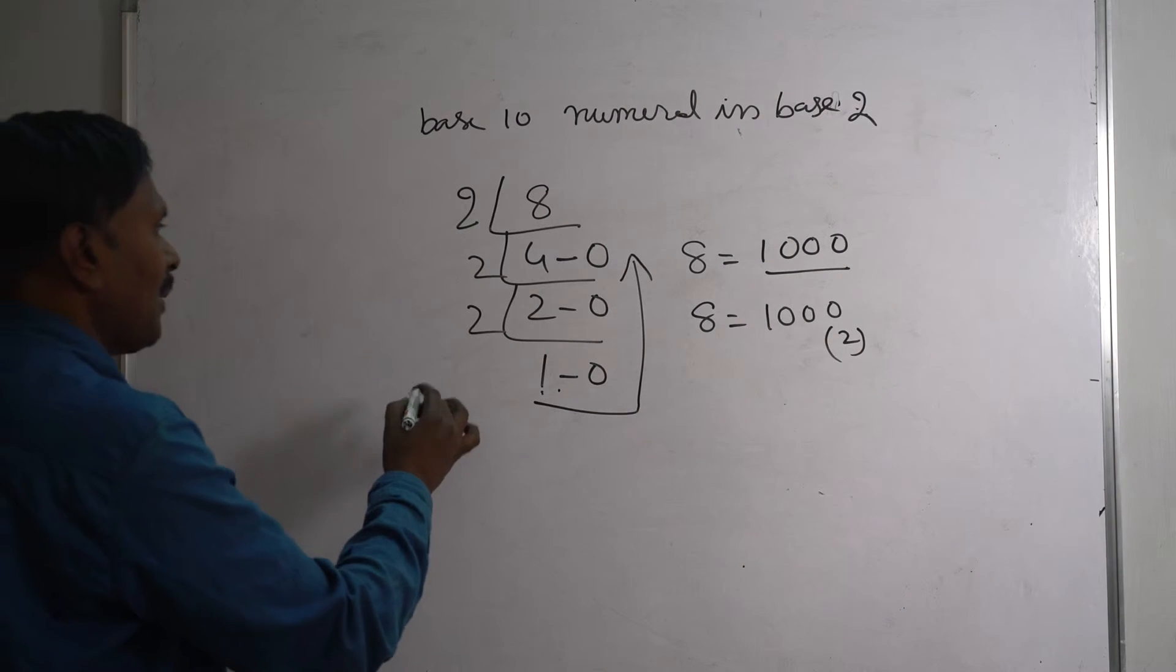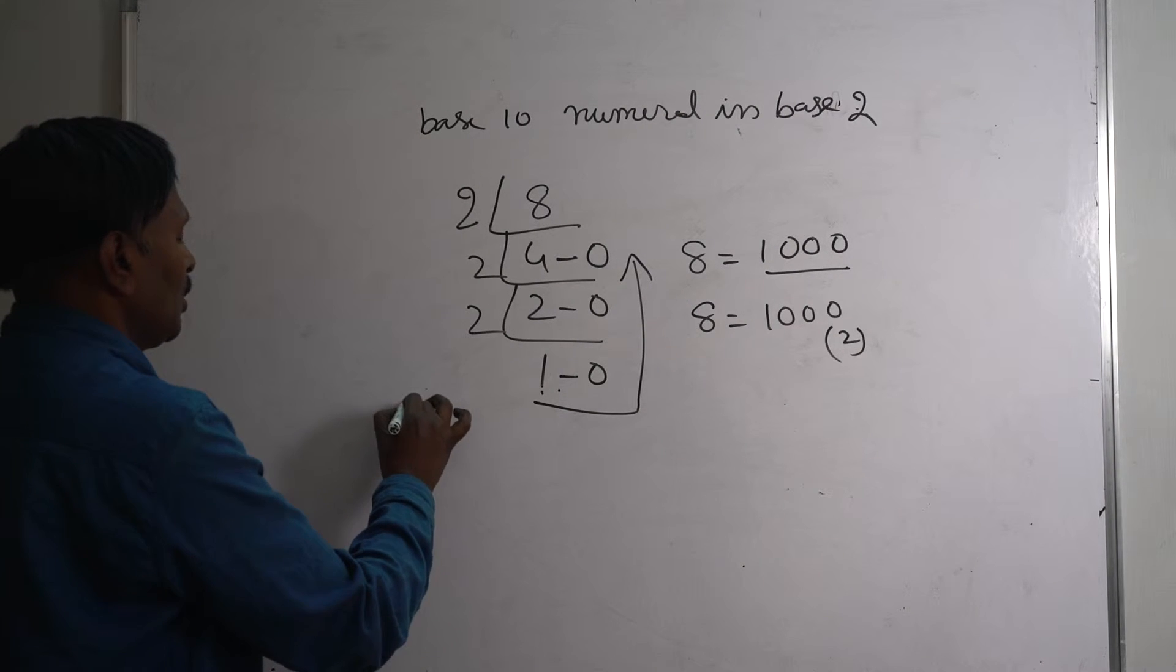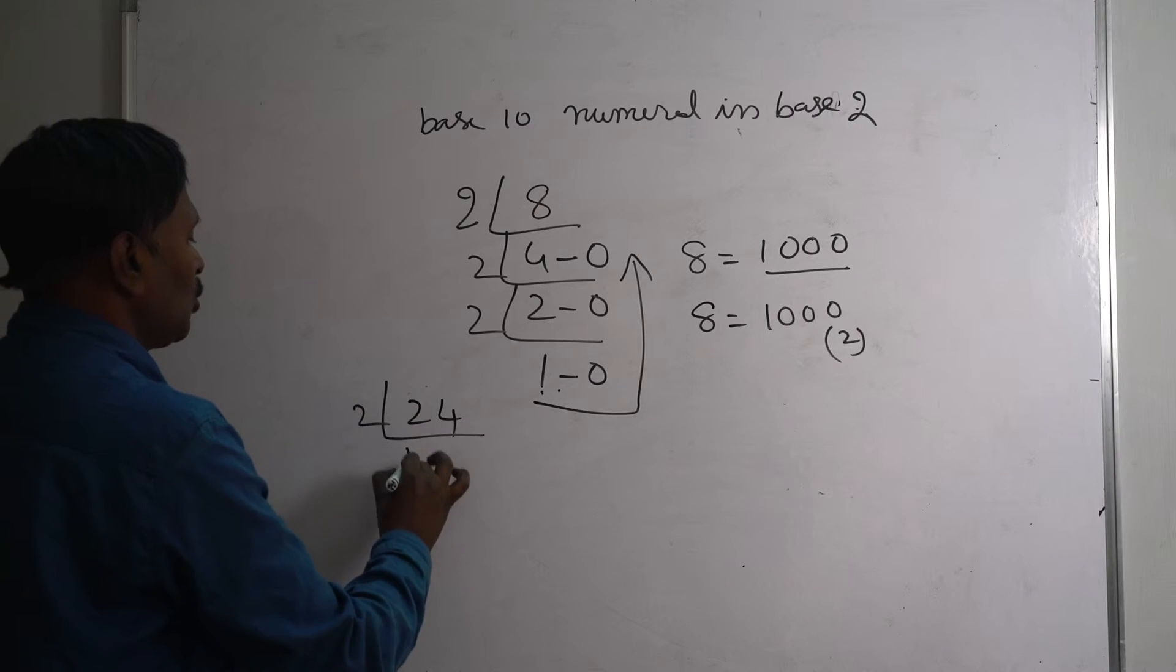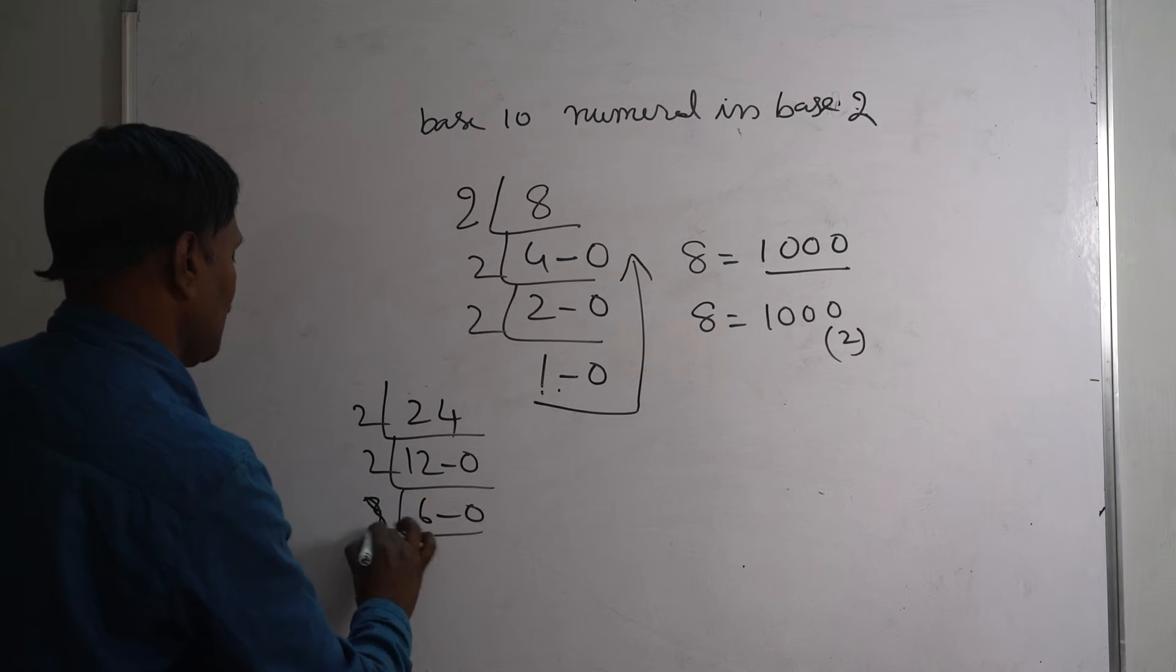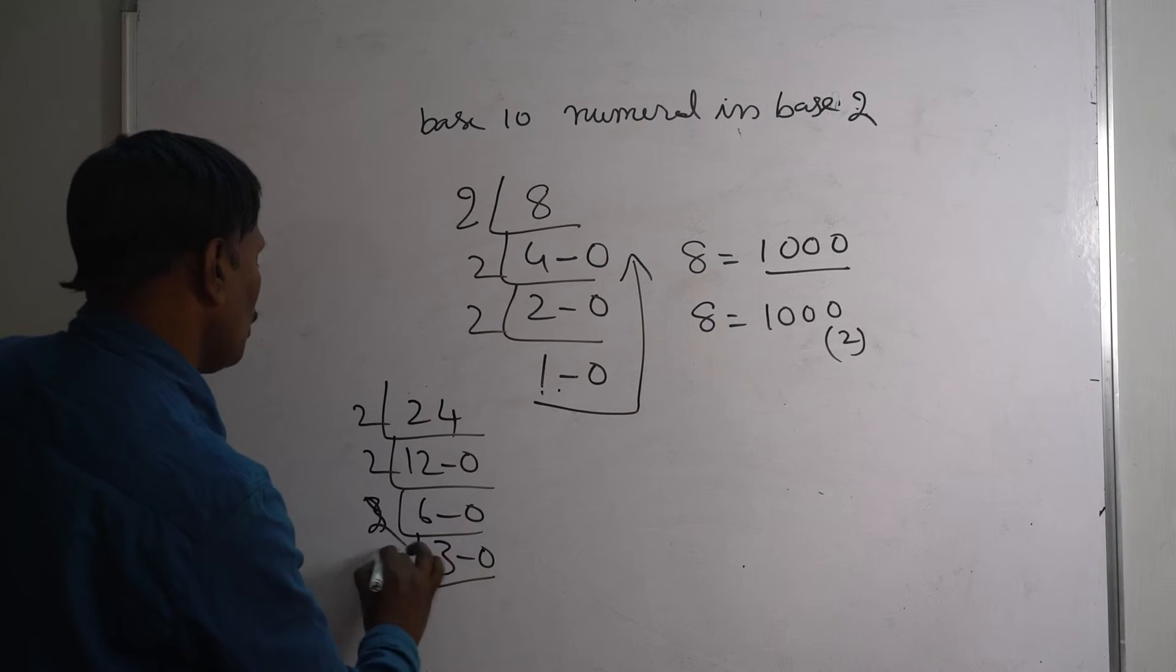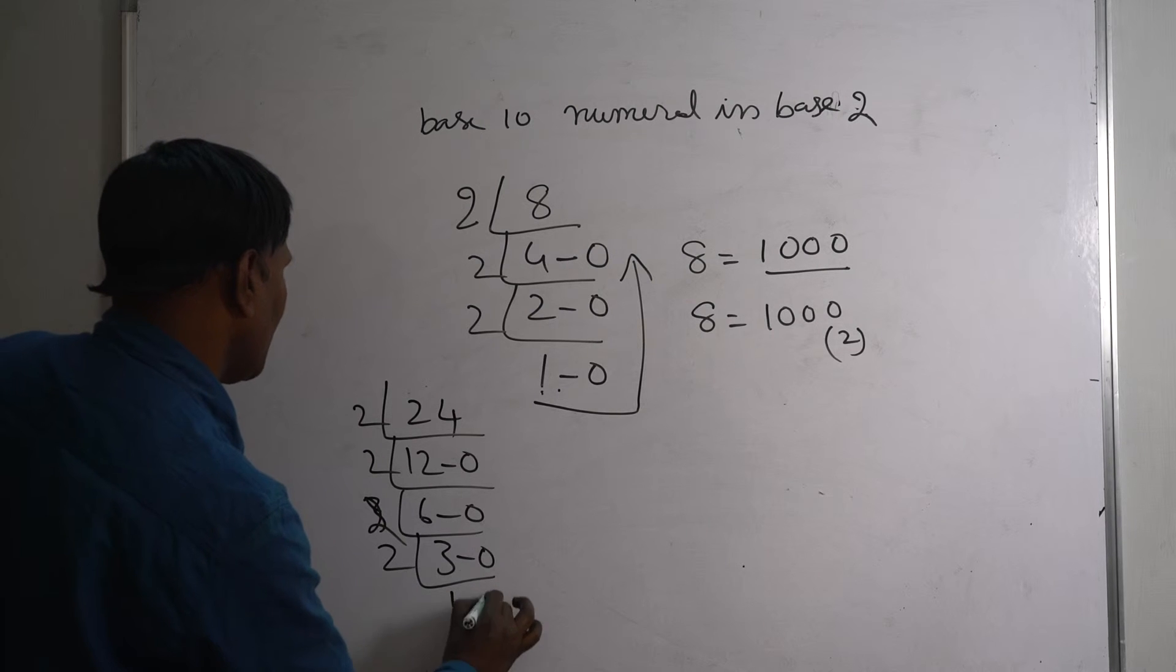Next, one more example: 24. 2 into 12 remainder 0, 2 into 6 remainder 0, 2 into 3 remainder 0, 2 into 1 remainder 1.